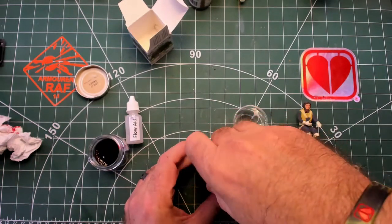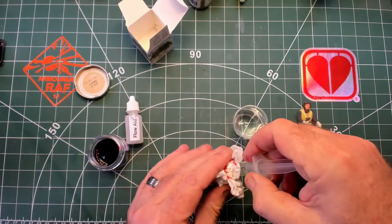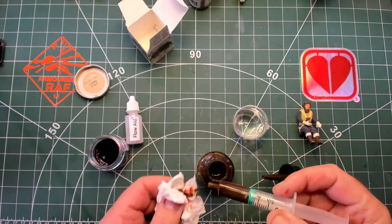Next, take some burnt umber ink. I use a ratio of two drops of red ink to one drop of brown ink.